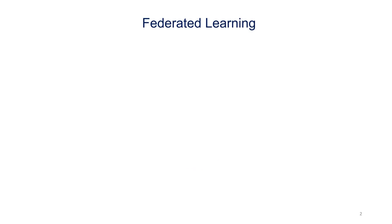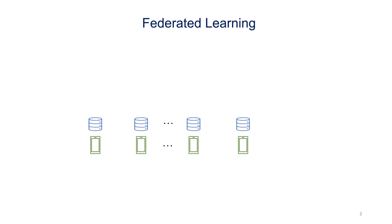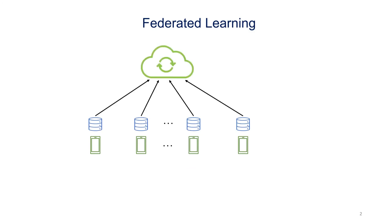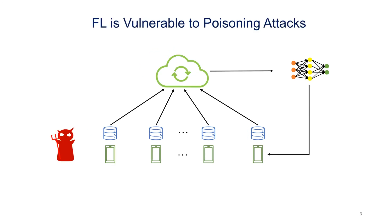We consider a single global model setting where there are some clients holding some local data and a local model. There is also a cloud server which maintains a global model. The clients and the server aim to jointly learn a good global model through multiple rounds of communication, and the learned global model will be used to provide service to the clients. Due to its distributed nature, Federated Learning is vulnerable to poisoning attacks, whose goal is to decrease the accuracy of the global model.